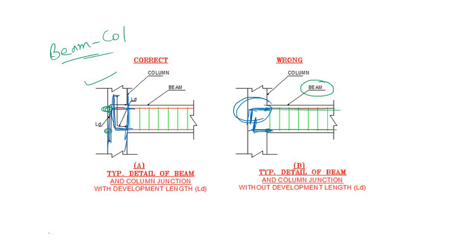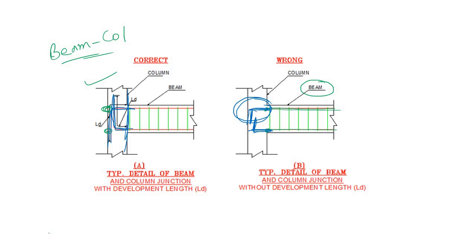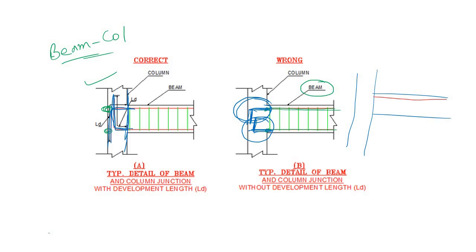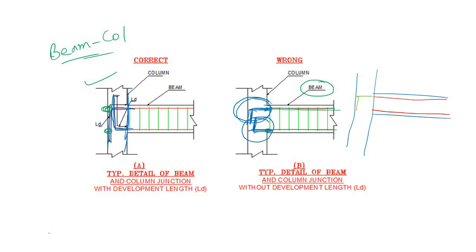Now the question is: why is development length needed at all? Why do we need to provide this extra amount of reinforcement? If this is the column and this is the beam, why is the reinforcement up to the column face not sufficient — why do we need to provide this extra length?